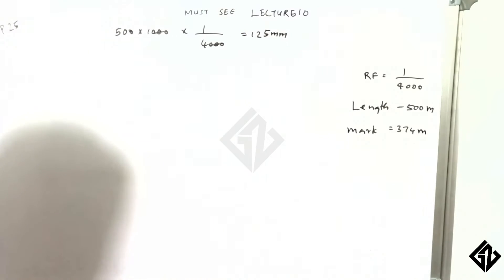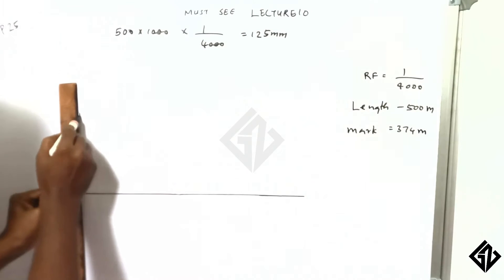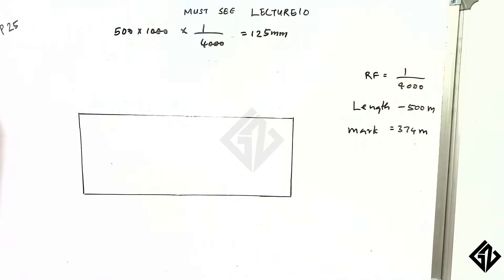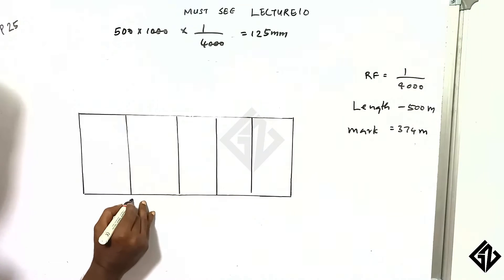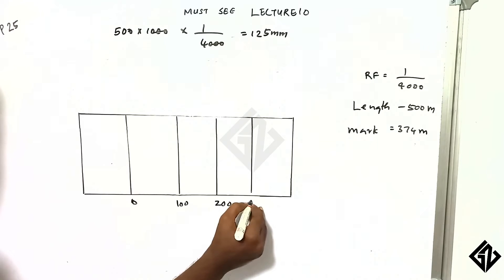The length of the 500 meters is in a rectangle. This is 500 meters. If you divide this, the main division is 100 meters. This is 0, 100, 200, 300, 400 meters.